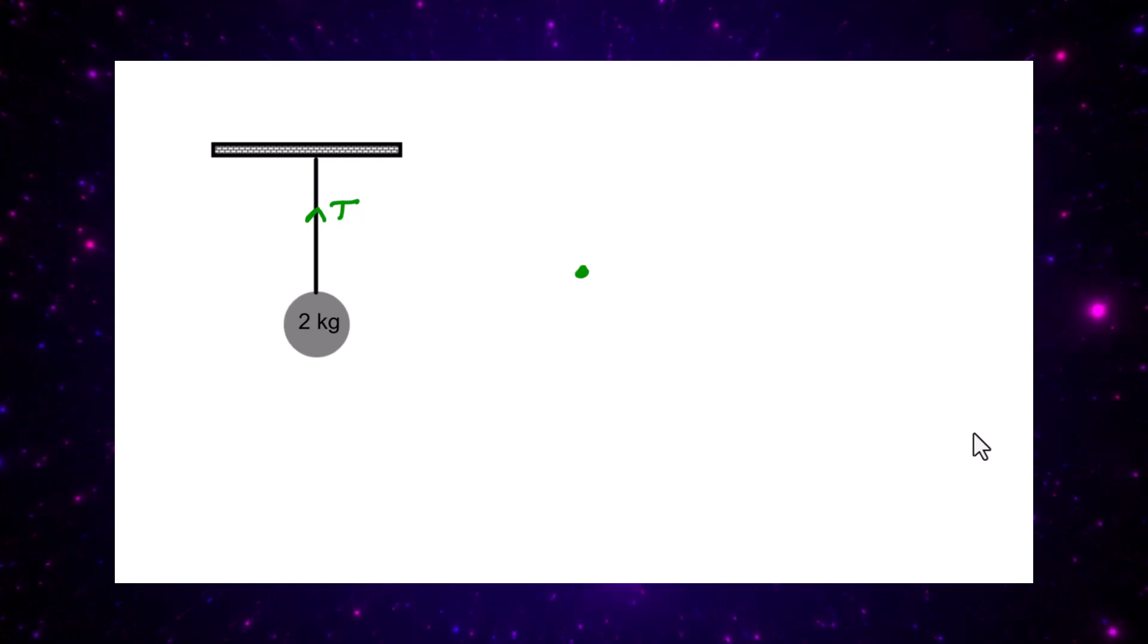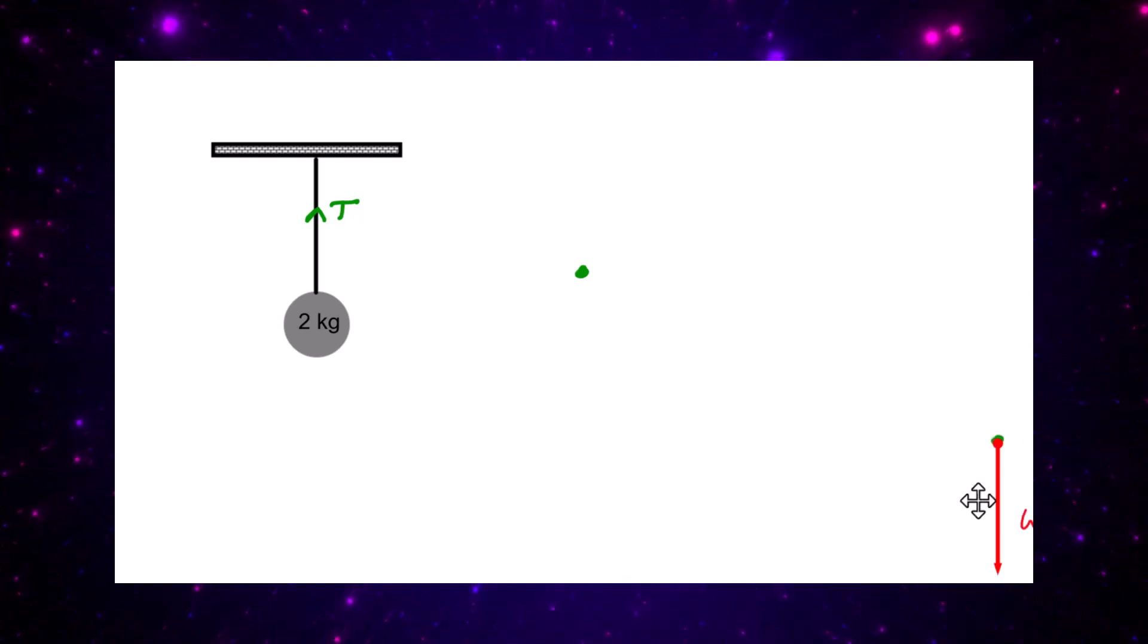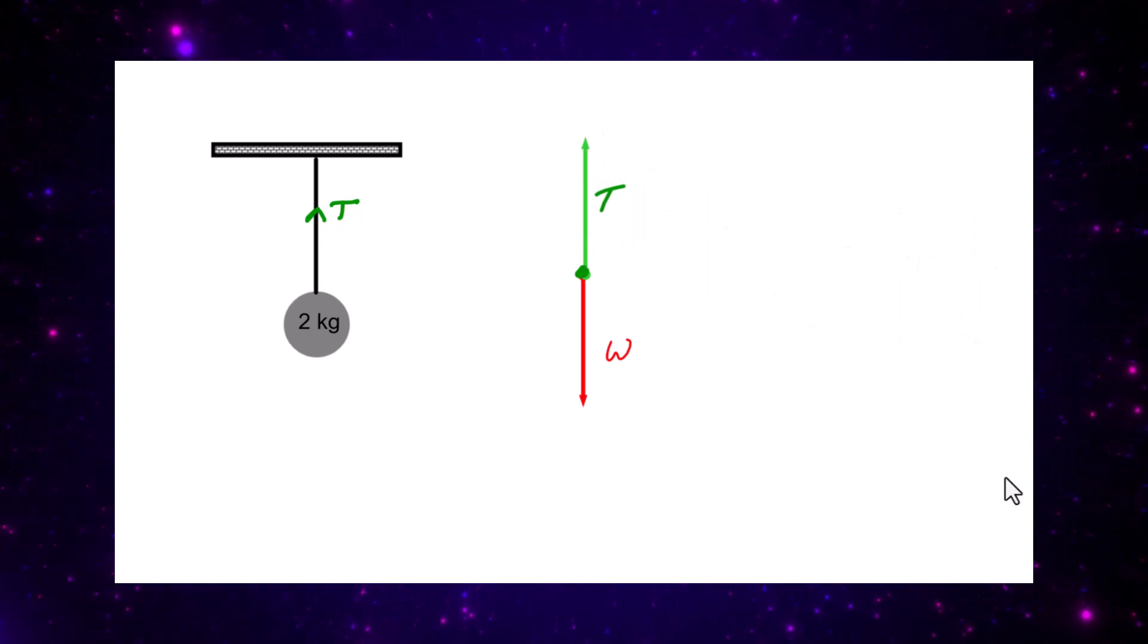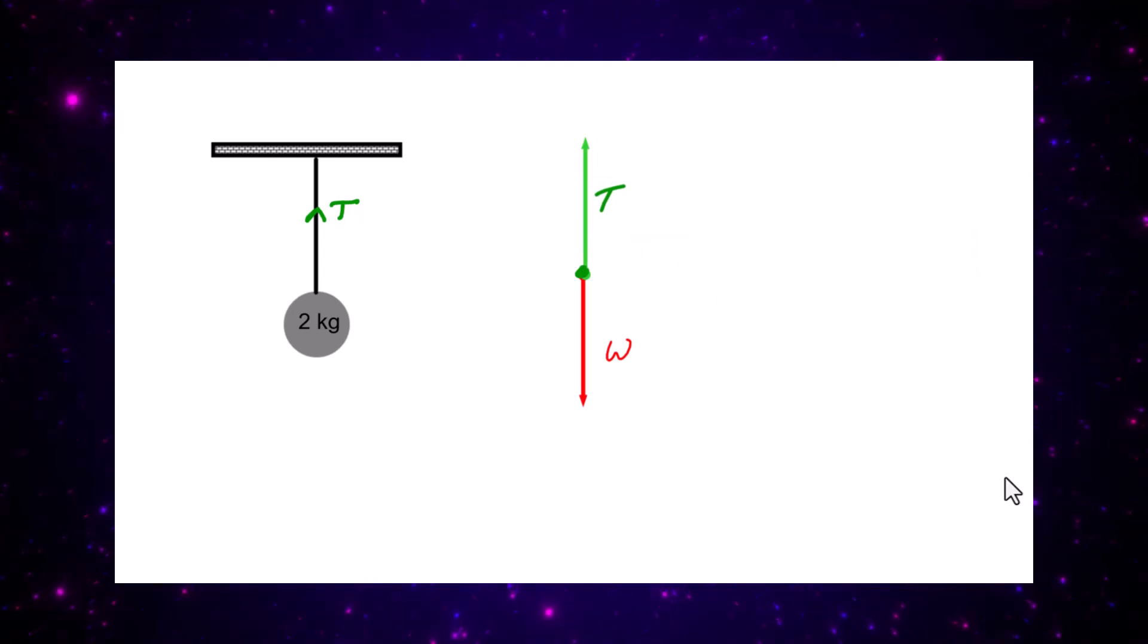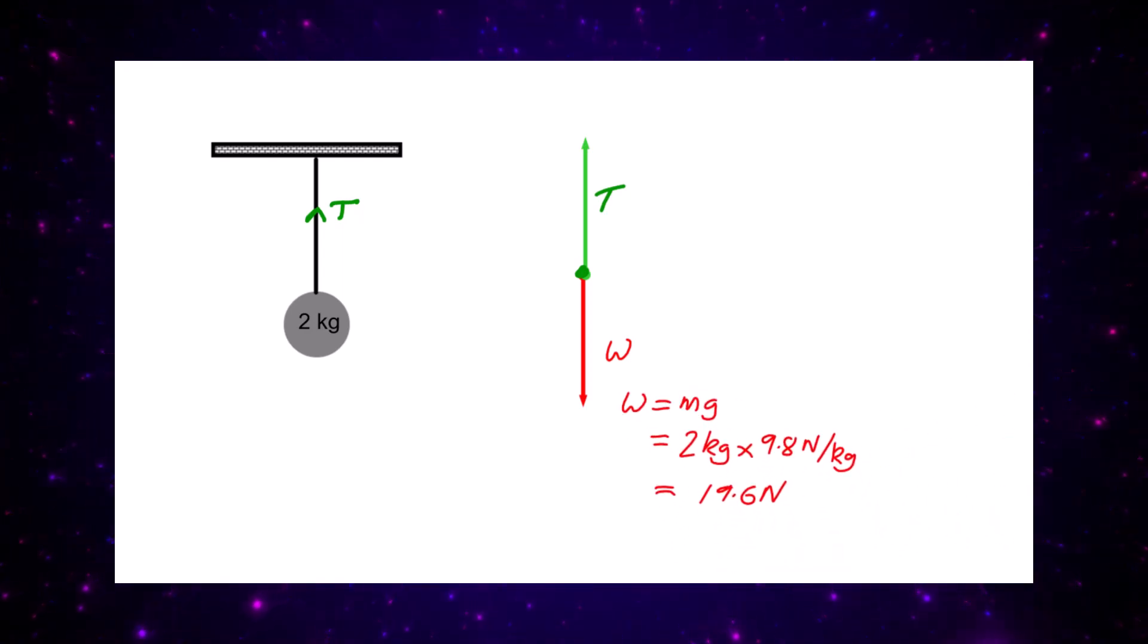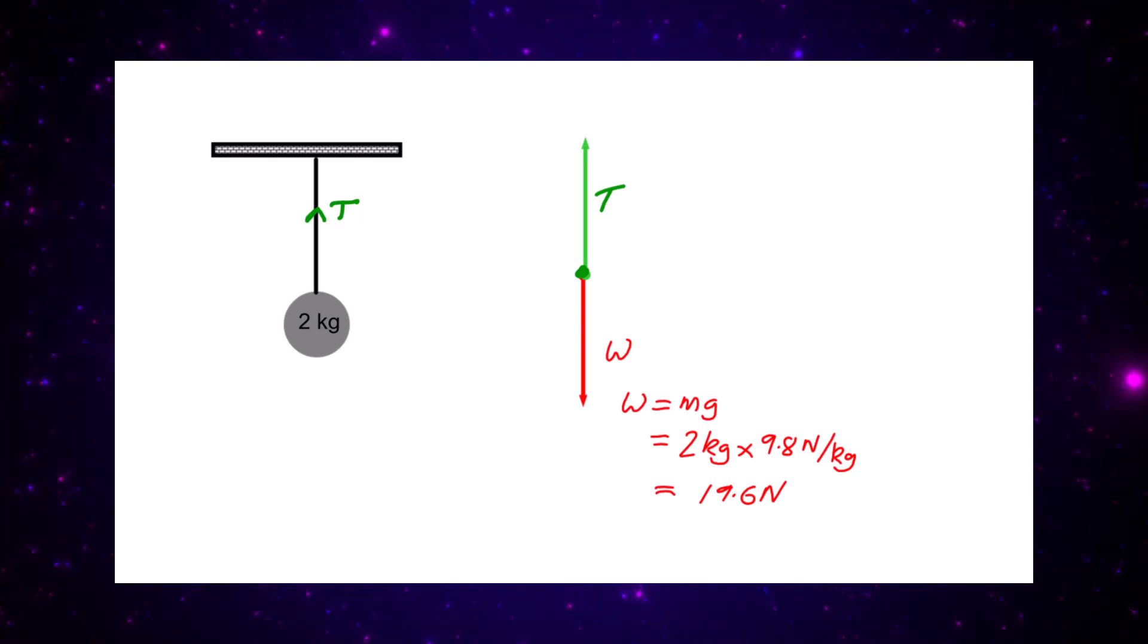The forces acting on that two kilogram ball are the weight of the ball acting downwards and the upward force T which is caused by the rope's tension pulling the ball upwards. What we can find out straight away is the weight of the ball, because the weight is equal to mass times gravity: two kilograms times 9.8 newtons per kilogram, and the weight of the ball must be 19.6 newtons.